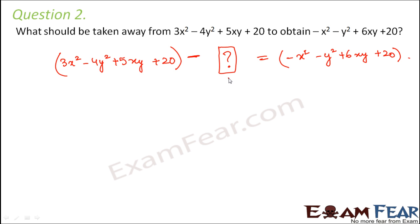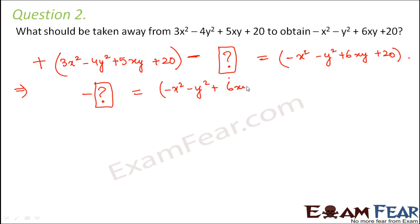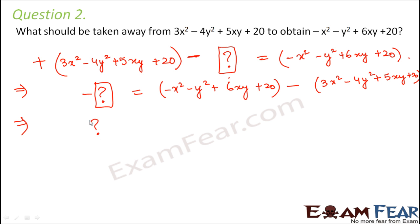We need to find the value of the question mark. If we keep the question mark on one side but it carries a negative sign, and shift the entire expression to the other side, the plus sign becomes a minus sign. So we get minus the expression minus the question mark. To isolate the question mark, we shift the minus sign across as well, which changes the sign of the result.